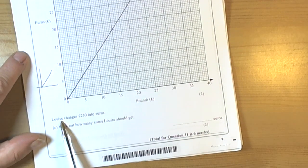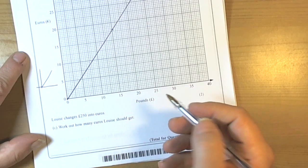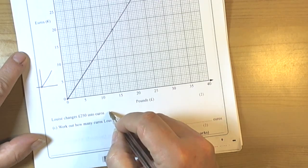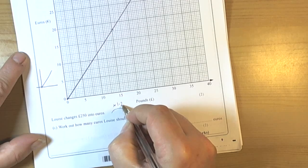It's asking Louise to change £250 into euros. So again the conversion was to go from pounds to euros, we had to multiply by 1.2.